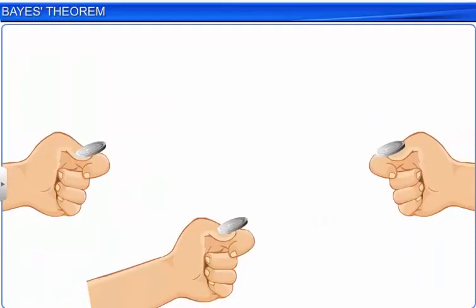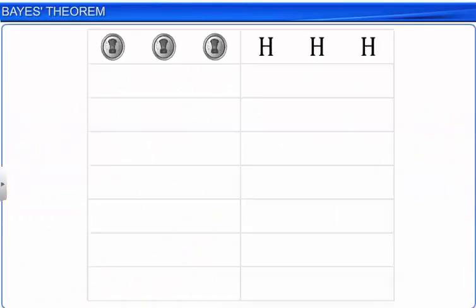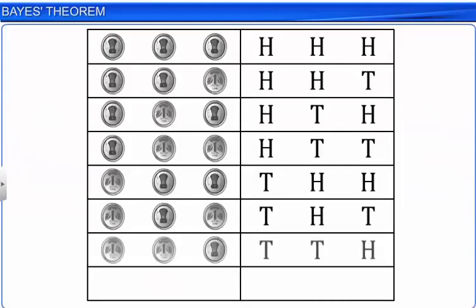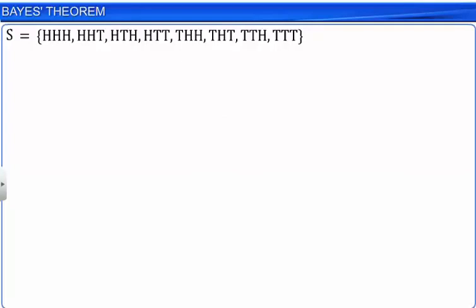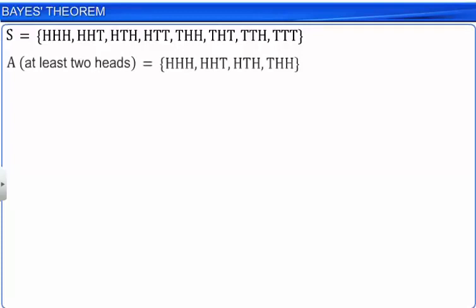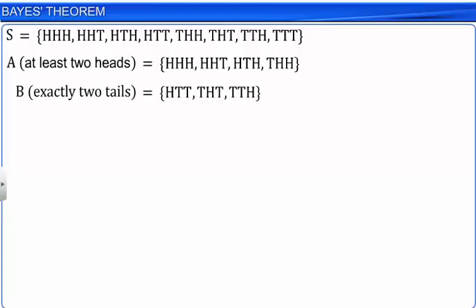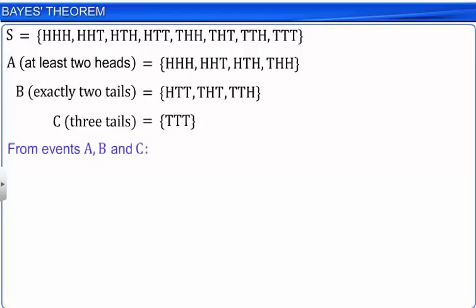Consider an experiment of tossing three coins simultaneously. The sample space of the experiment has eight outcomes, as shown here. Consider three events A, B, and C, where event A is defined as getting at least two heads, event B is defined as getting exactly two tails, and event C is defined as getting three tails. From these three events, it is clear that events A and C, and events B and C are disjoint.